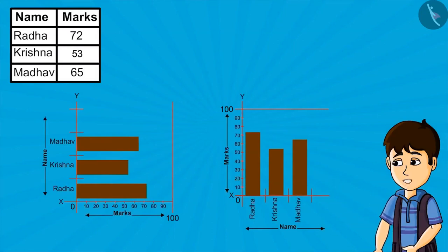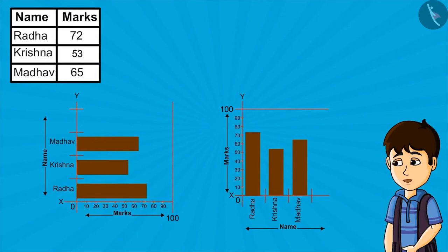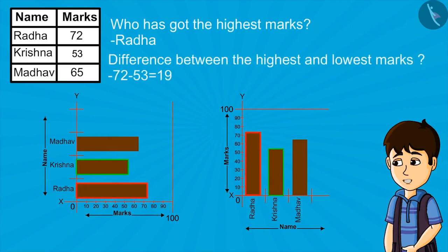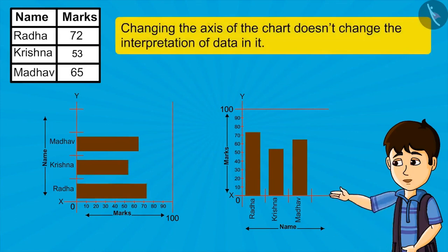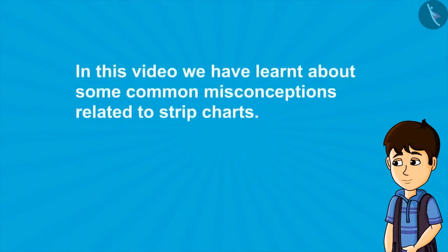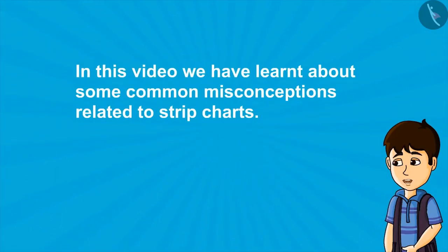Some people also believe that changing the axis of the chart gives wrong interpretation of data. Look at both these charts carefully. We have only changed the coordinate axis, but still we are getting the same information from the data — who has got the highest marks, the difference between the highest and lowest marks, etc. So we can say that changing the axis of the chart doesn't change the interpretation of data. In this video, we have learned about some common misconceptions related to strip charts.